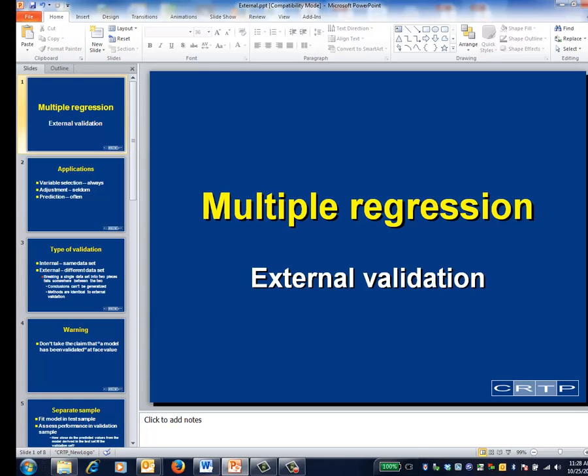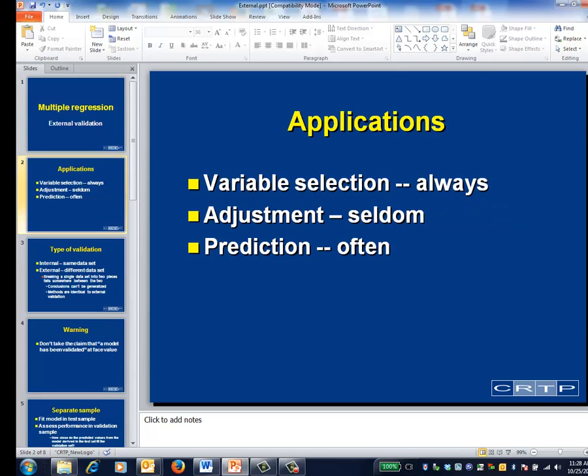This is the multiple regression video on external validation. As you may recall, the three main reasons for creating a multi-predictor model are variable selection, covariate adjustment, and prediction.